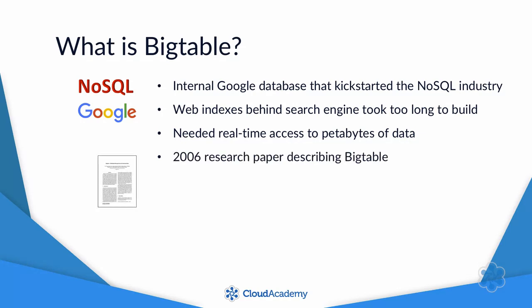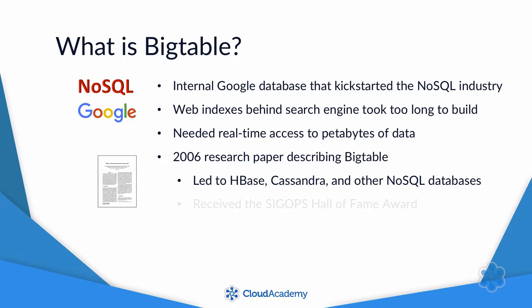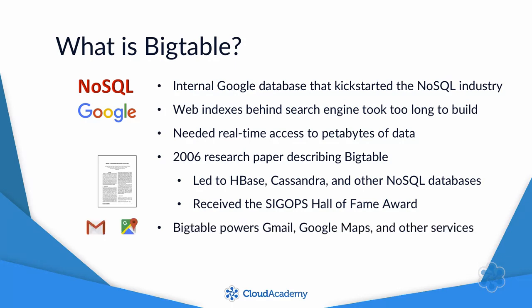In 2006, Google released a research paper describing Bigtable, which gave people outside of Google ideas that led to the creation of HBase, Cassandra, and other popular NoSQL databases. Ten years later, this paper received the SigOps Hall of Fame Award for being one of the most influential papers in the previous decade. Google went on to use Bigtable to power many of its other core services, such as Gmail and Google Maps.